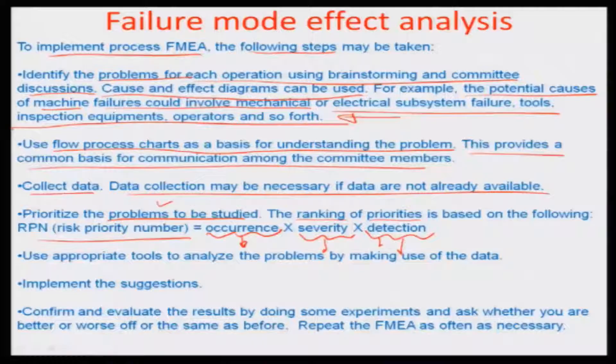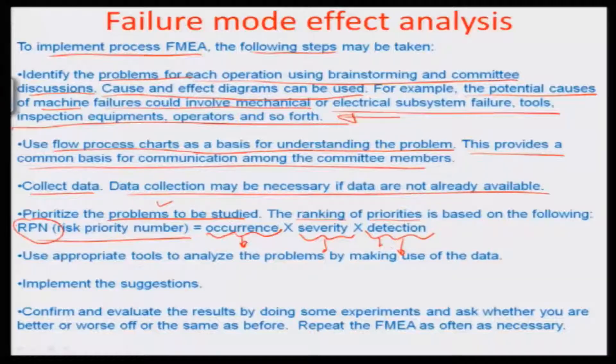Then there is the detectability of the system - how difficult or how easy it is to detect. If a problem is very hard to detect then obviously the rank of that particular problem would go up. On a 0 to 10 scale, if it is easy to detect then the rank would be slightly lower. This formulates the RPN or risk priority number. You organize on the basis of decreasing order of RPNs, and obviously the first RPN which is the highest would have a very high occurrence, very severe problem, and very difficult to detect situation.